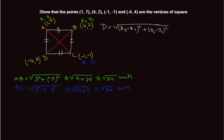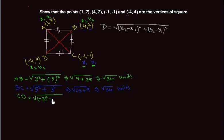Now let us find the distance CD. Taking C as (x1, y1) and D as (x2, y2), CD equals the square root of (-4 minus (-1)) squared plus (4 minus (-1)) squared, which is the square root of (-3) squared plus 5 squared, that is 9 plus 25, equals the square root of 34 units.